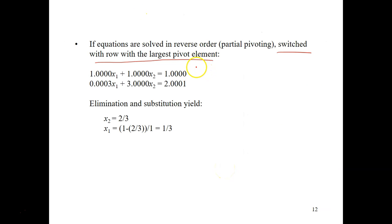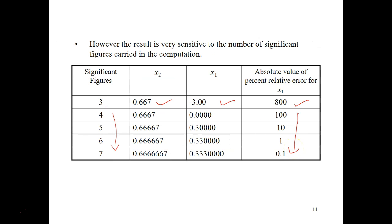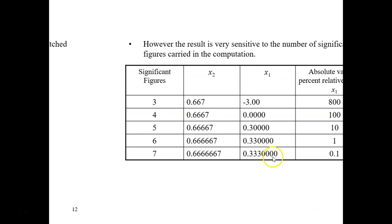After partial pivoting, we switch the rows and then perform simple elimination, getting x2 equals two-thirds and x1 equals one-third. Using three significant figures gives the same result, but increasing the significant figures shows the errors are now so tiny. Before partial pivoting the errors were very large; after switching rows the errors decrease tremendously.